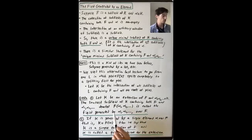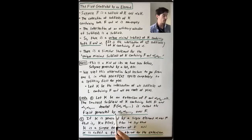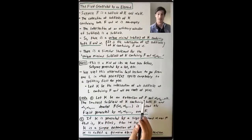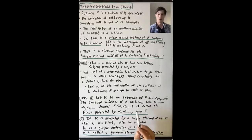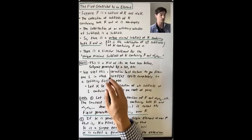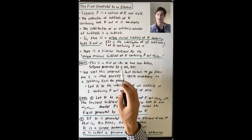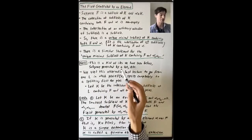You're starting with this one field F, and you're taking the field generated by a whole bunch of elements that are contained in this field K, which is some extension of F. This 'generated by' language matches up with the 'generated by' language for subgroup generated by a subset, ideal generated by a subset, submodule generated by a subset.